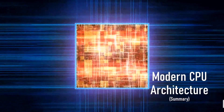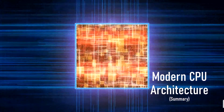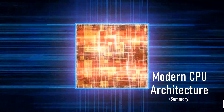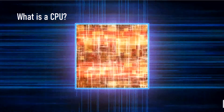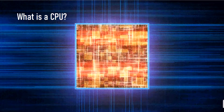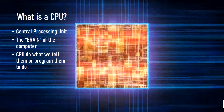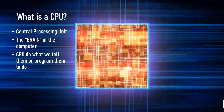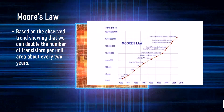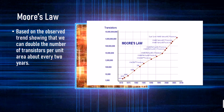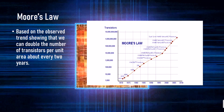Good day. I am here to discuss the summary of modern CPU architecture. First, let us define what is a CPU. CPU stands for Central Processing Unit, in which it is the brain of the computer. It does what we tell them or program them to do.